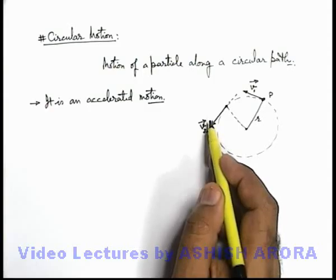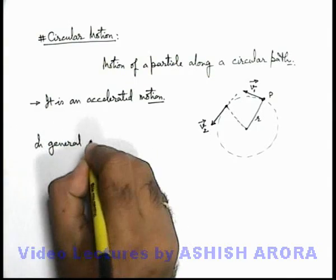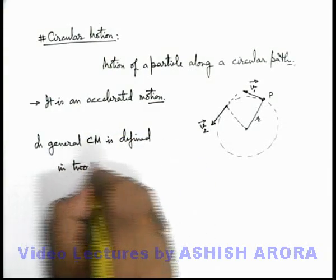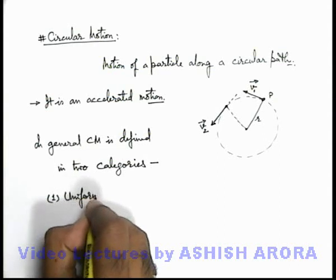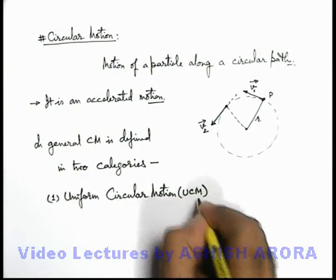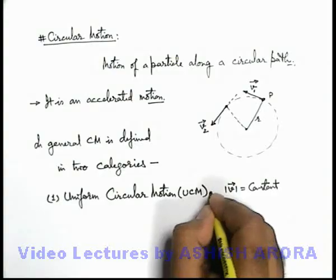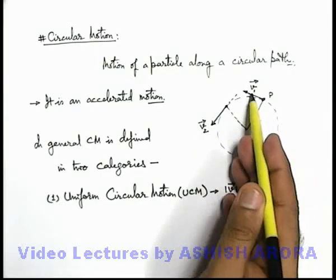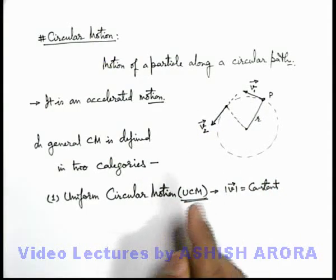Based on the magnitude of velocity, circular motion can be classified into two basic categories. The first is uniform circular motion, also abbreviated as UCM. This is the situation in which the magnitude of the velocity vector remains constant — whenever a particle is moving with uniform speed, its speed of motion is not changing, however the direction is always changing. So if speed remains constant throughout the circular motion, we call it uniform circular motion, abbreviated as UCM.